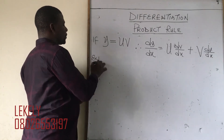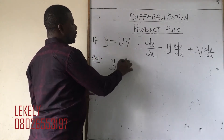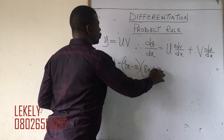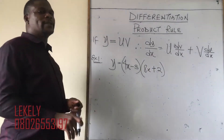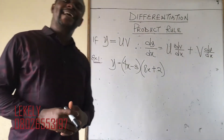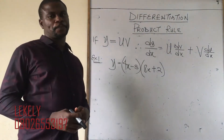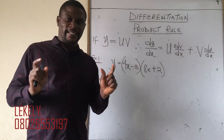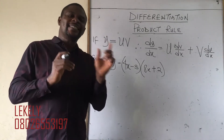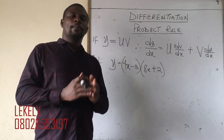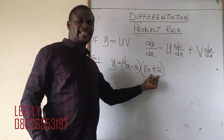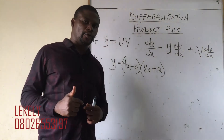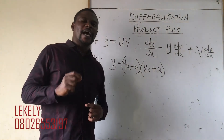Don't let this scare you — it is very straightforward. You pick the letter u and differentiate v, then pick the letter v and differentiate u. Now, how do you know when to apply the product rule? Anytime the question you are given has two brackets, or two functions that can be differentiated independently sitting side by side, you know it is product rule.